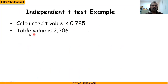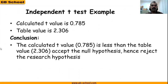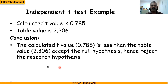The calculated t value is 0.785 and the table value is 2.306. Since the calculated value 0.785 is less than the table value 2.306, we accept the null hypothesis: there is no significant difference between the experimental and control groups. The alternative hypothesis stating a significant difference between these two groups is rejected.